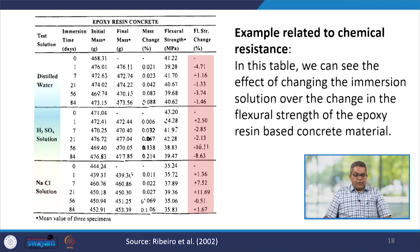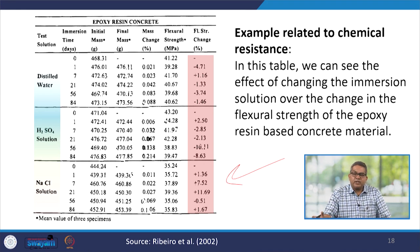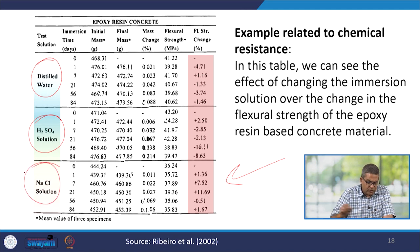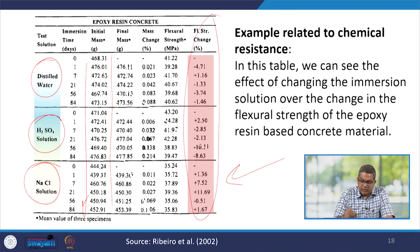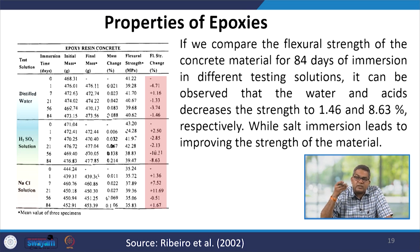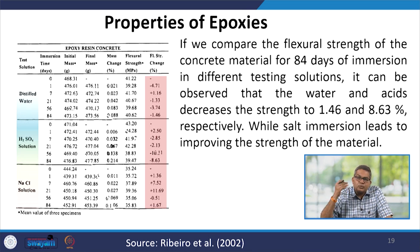There are several examples related to chemical resistance. In a particular table, we can see the effect of changing the immersion solution on the flexural strength of epoxy resin-based concrete materials. Stress solutions of distilled water, H₂SO₄ solution, or NaCl solution were tested with varying immersion times. Comparing flexural strength after 84 days of immersion, water and acid decrease the strength by 1.46 to 8.63 percent respectively, while salt immersion leads to improving the strength of the material.